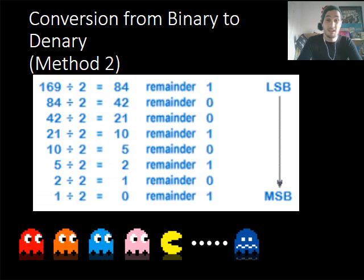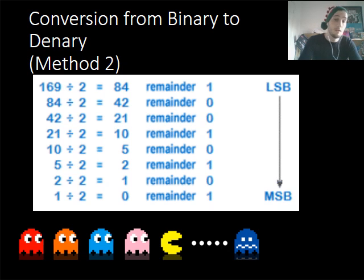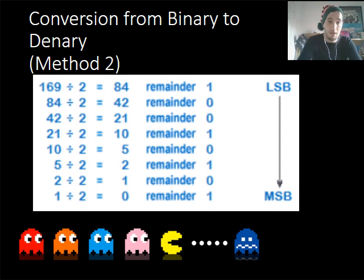This is another way you can see how it works. Notice you've got your least significant bit and your most significant bit. The most significant bit is always the value that will be your highest place value. So if I was to write this out, I would write out 1, 0, 1, 0, 1, 0, 0, 1 — and that is how I'd get my answer.